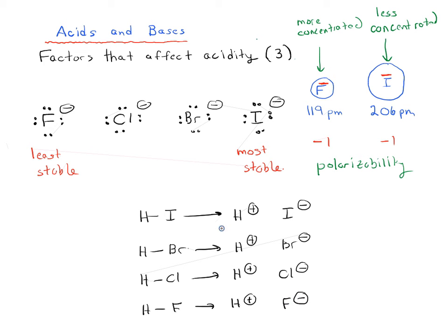So of all these anions, we said that I minus was the most stable and fluoride ion is the least stable. That means for each of these reactions, as we go from left to right, this is going to be the most favorable, this reaction of HI.